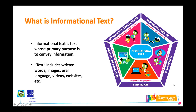So what is informational text? Informational text is text whose primary purpose is to convey information. Note that text here includes written words, images, oral language, videos, and websites. There are five different types: procedural or how-to, which teaches you how to do something; biographical, which tells us about a real person; functional, which helps us do everyday tasks; non-fictional narrative, which shares and interprets a true story; and informative or explanatory, which conveys information about our world.